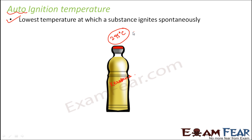Please understand the difference between the two. Flashpoint is only when you have an external source which can make that object catch fire. Auto-ignition means you do not need any source — once the object is heated to that temperature, it will catch fire on its own. No ignition source is needed.